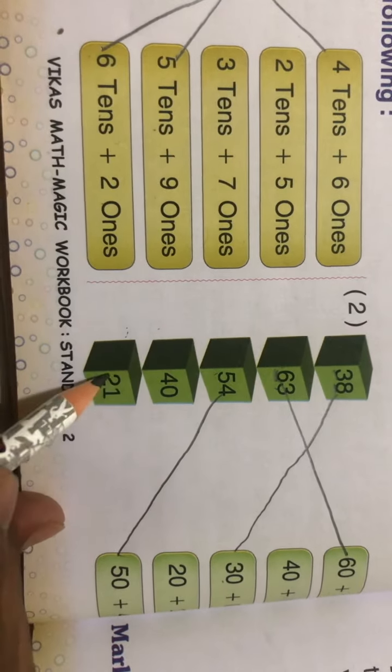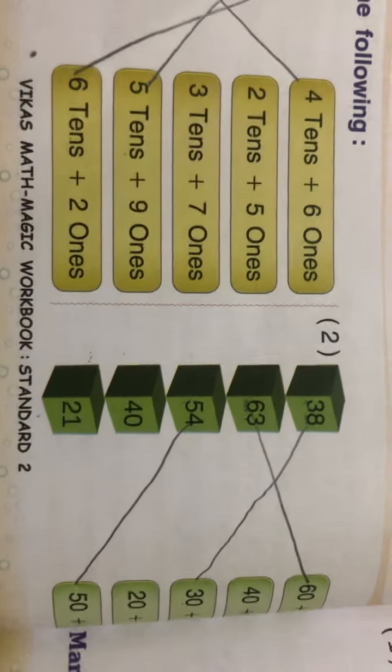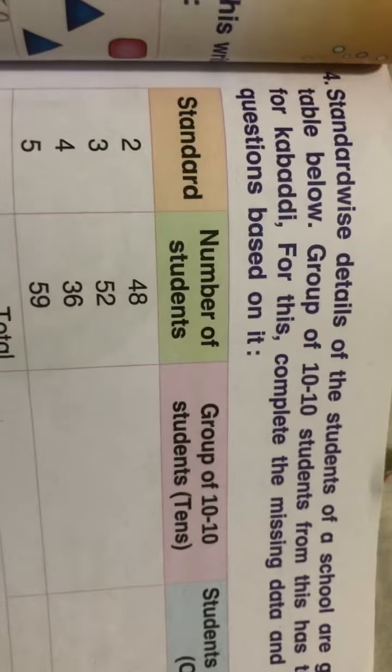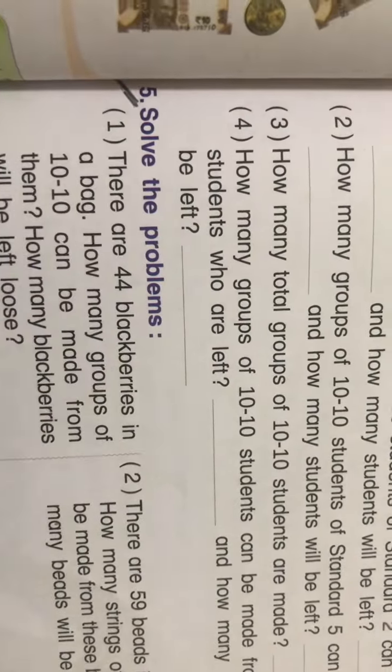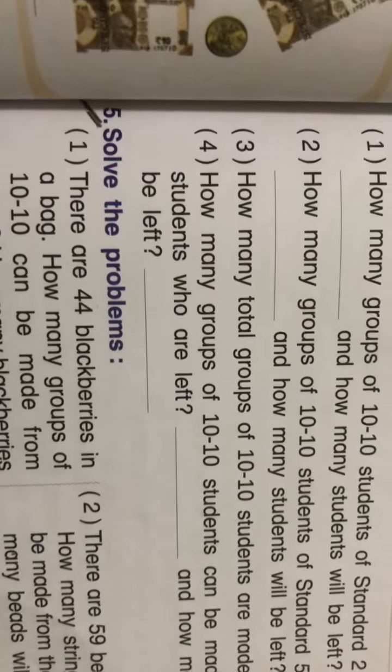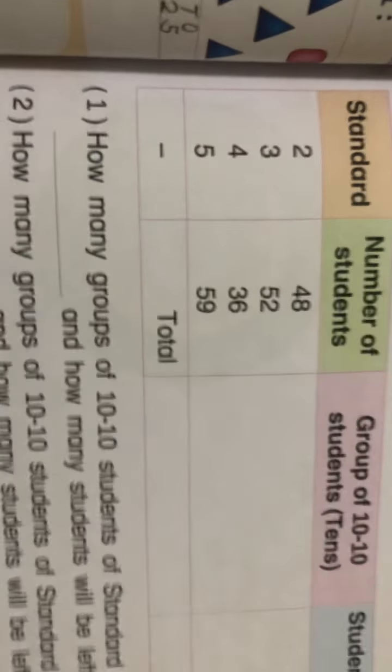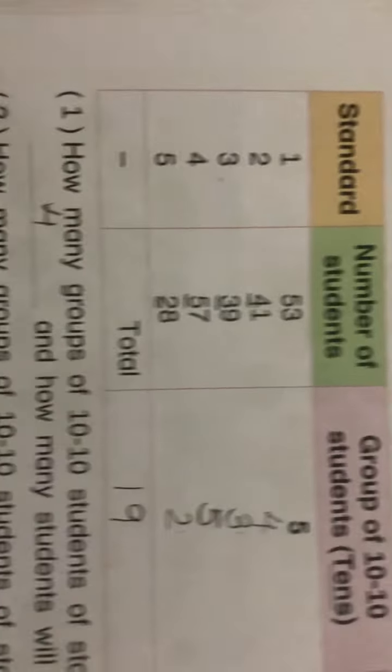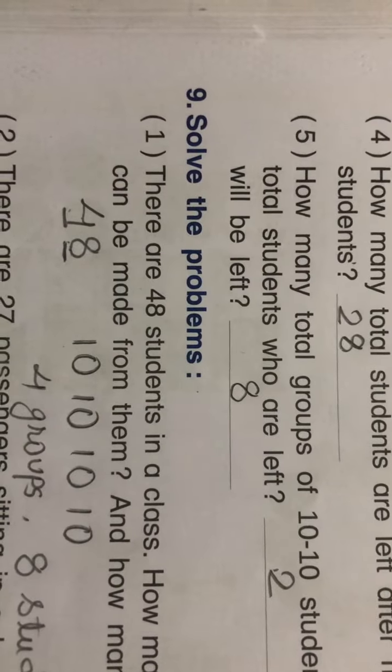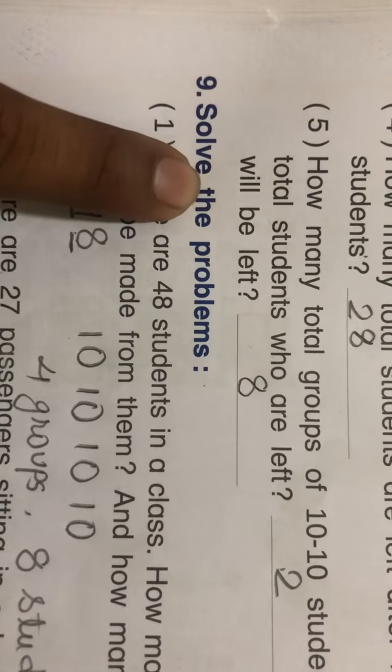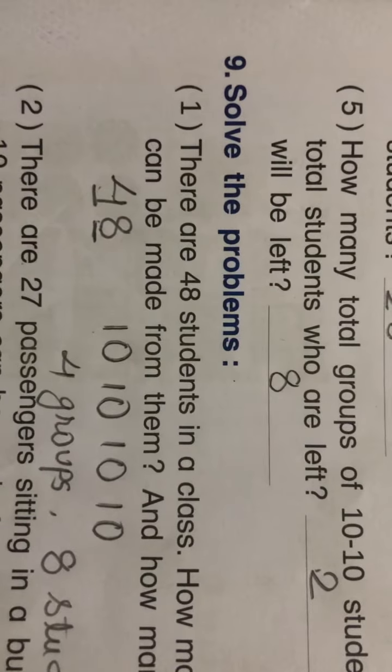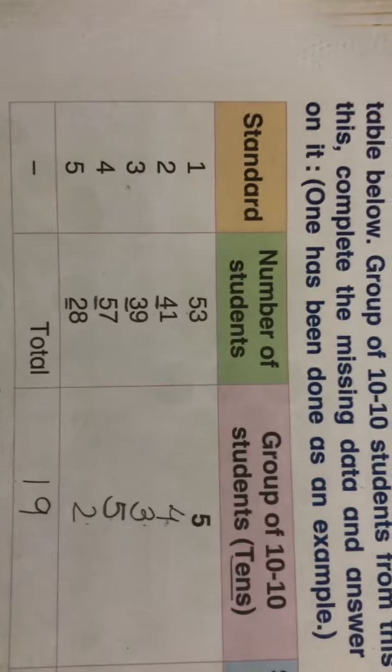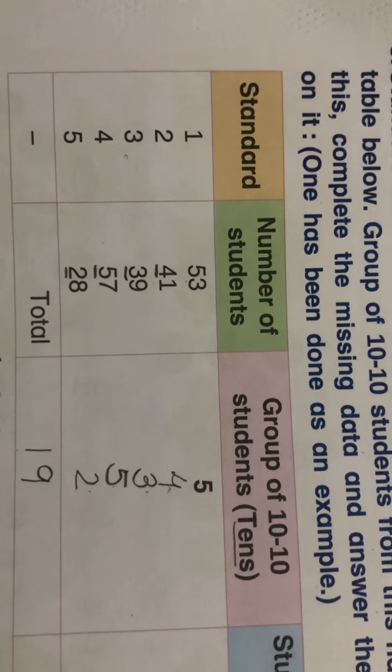Same way, do these two also yourself. Okay, now question number four and five, it is there in the workbook. See, this one is the question fourth one, and the next one, question nine, is the fifth last question. So refer these two questions and try to do it yourself. Okay, bye, take care.